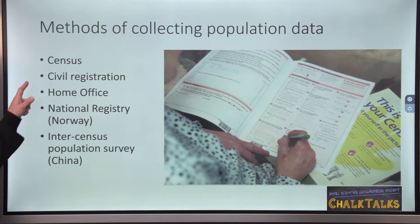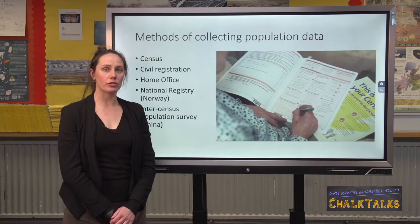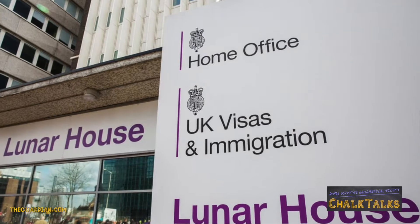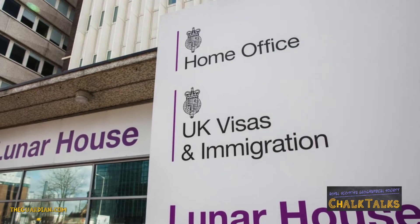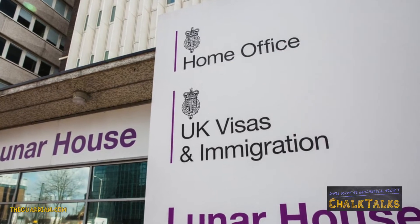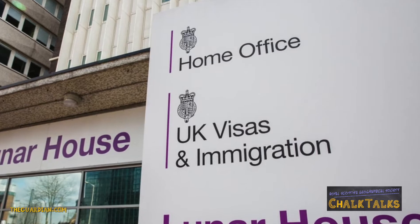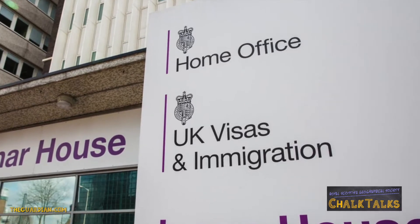In Scotland, the General Register Office is responsible for collecting information through a census every ten years. Another method is civil registration — events such as births, deaths and marriages have to be registered by law within a few weeks of them occurring. The Home Office is responsible for monitoring immigration, releasing statistics four times a year showing the number of people applying for citizenship, asylum and visas.